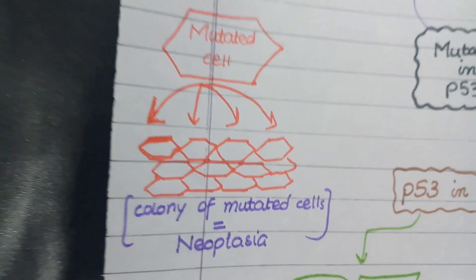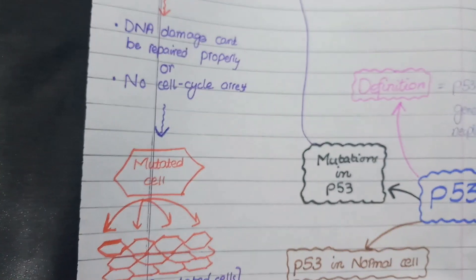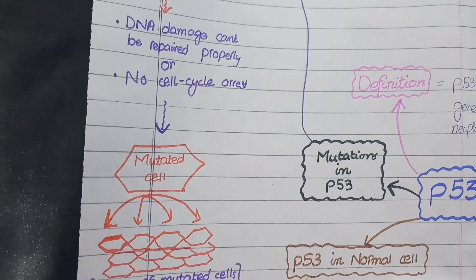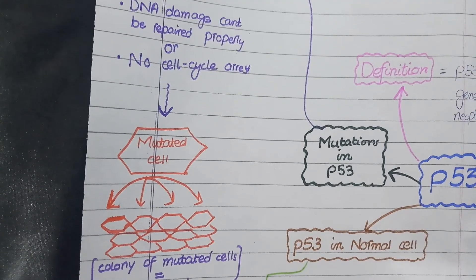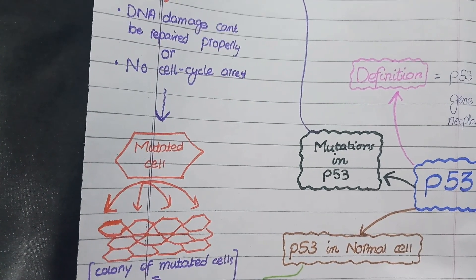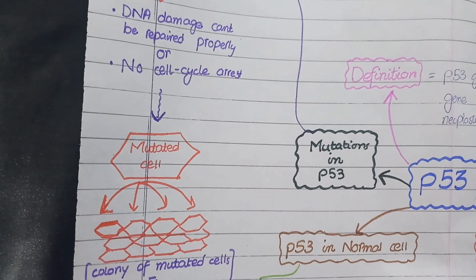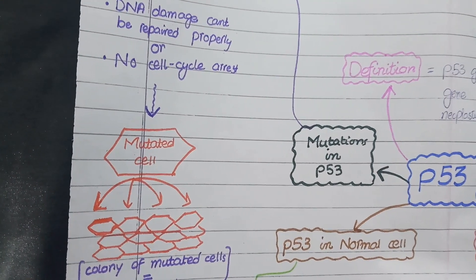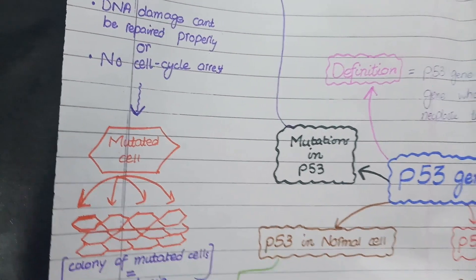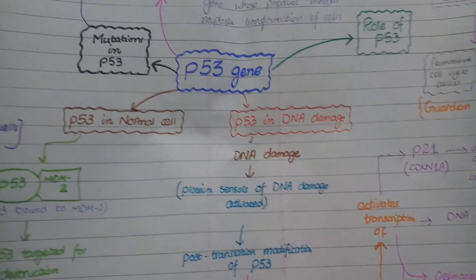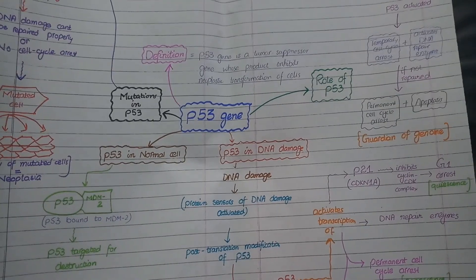After discussing the important role of p53, the significance of mutations in p53 are beyond any doubt. The amazing fact is that 70% of all cancers have mutations in p53, and the remaining 30% of cancers have mutations in other proteins that work upstream or downstream of this p53 pathway. So this is the importance of p53. This concludes our discussion on p53.